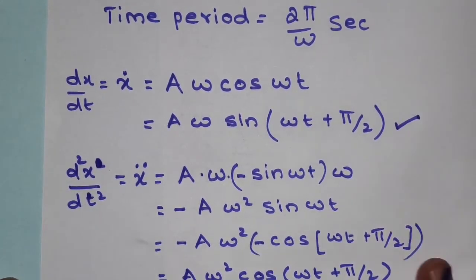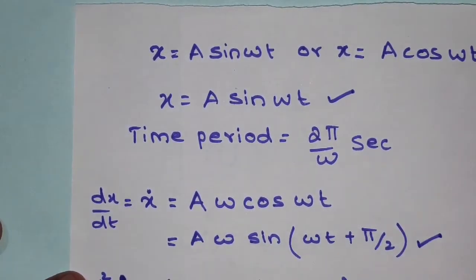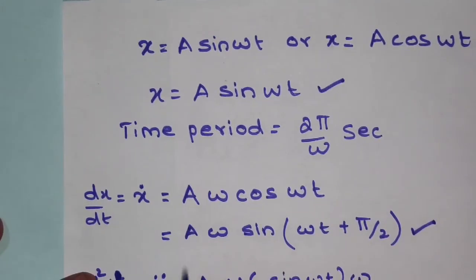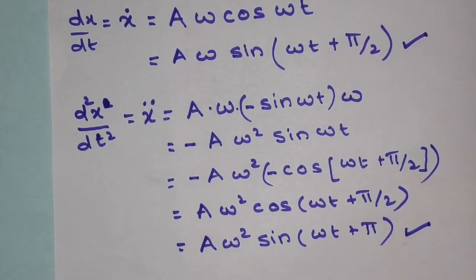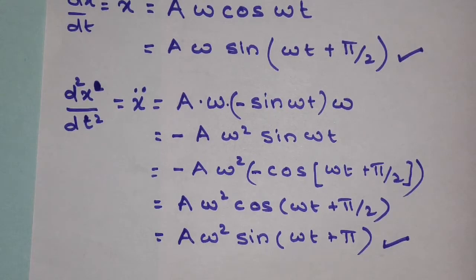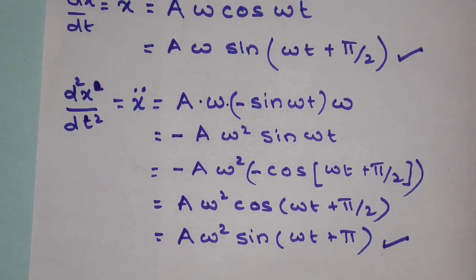So from displacement we determined velocity, and from velocity we determined acceleration — this is the essence of simple harmonic motion. In the next lecture we shall see how two SHMs can be added together. Thank you for patient listening. If you liked the video please like and share it with your friends and subscribe to the channel. If you have any doubts, please put a comment in the comment section and I'll try to clear them.